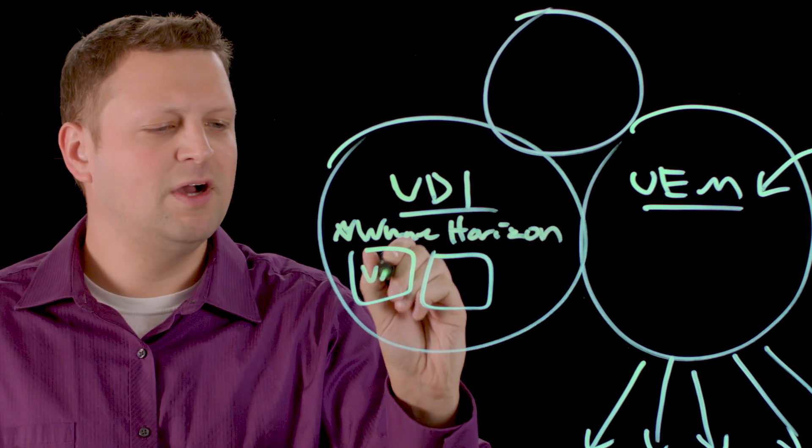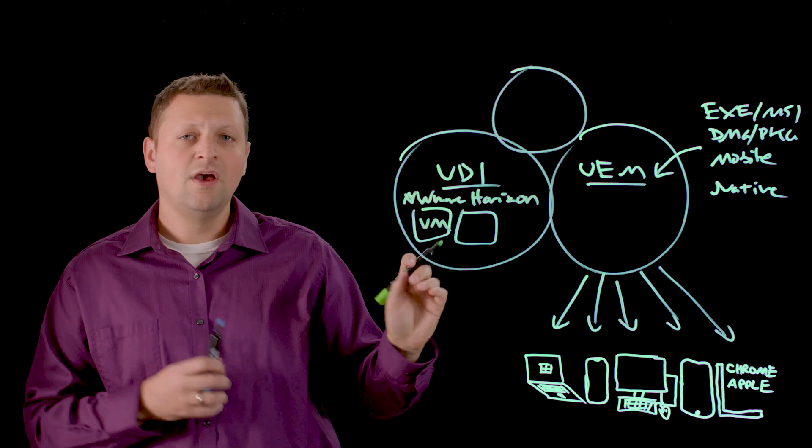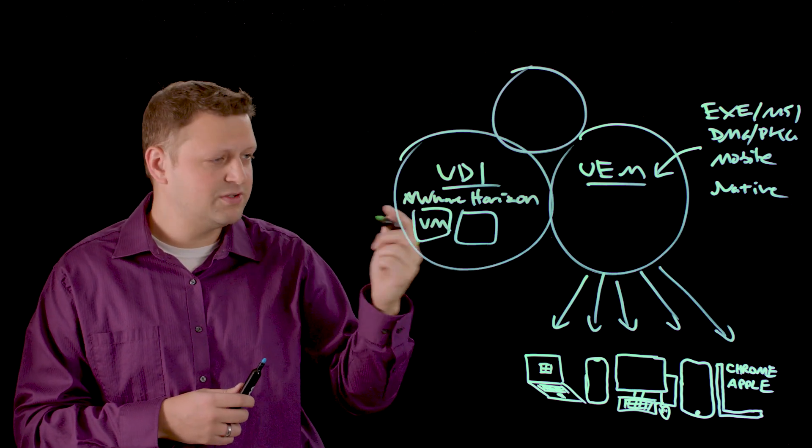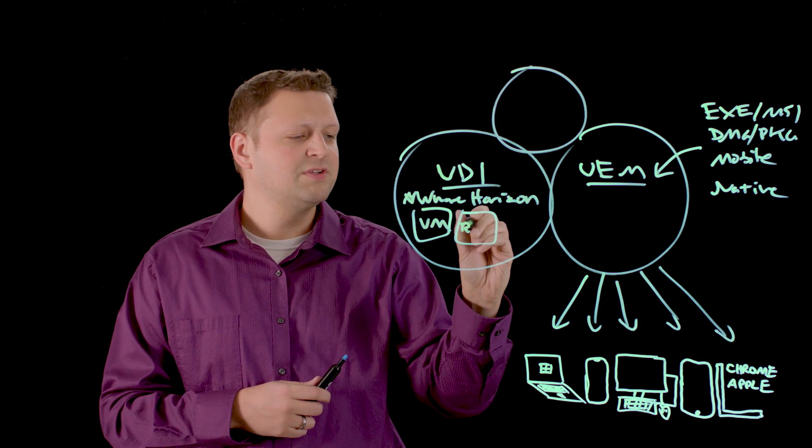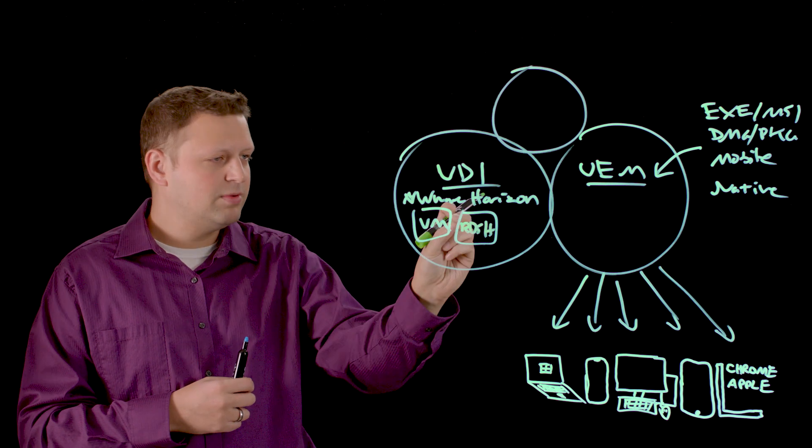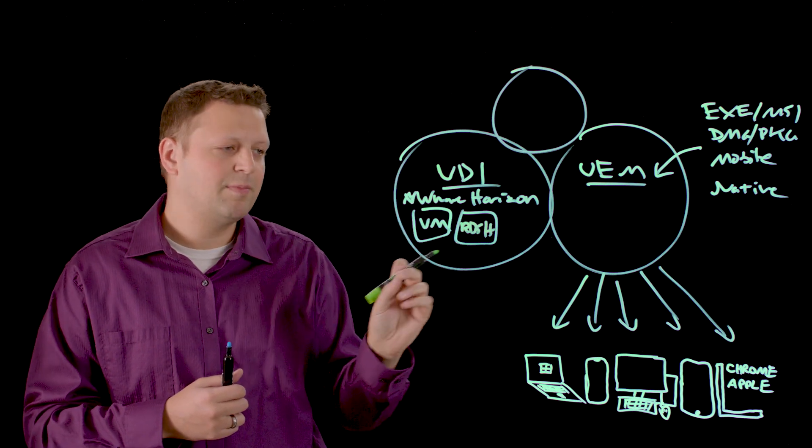In VMware Horizon we've got a couple different ways that we can deliver those applications. We can deliver a desktop virtual machine such as Windows 10 or Windows 7. We can also deliver what's known as RDSH applications, and that's an individual application that is published and run independently of other applications.